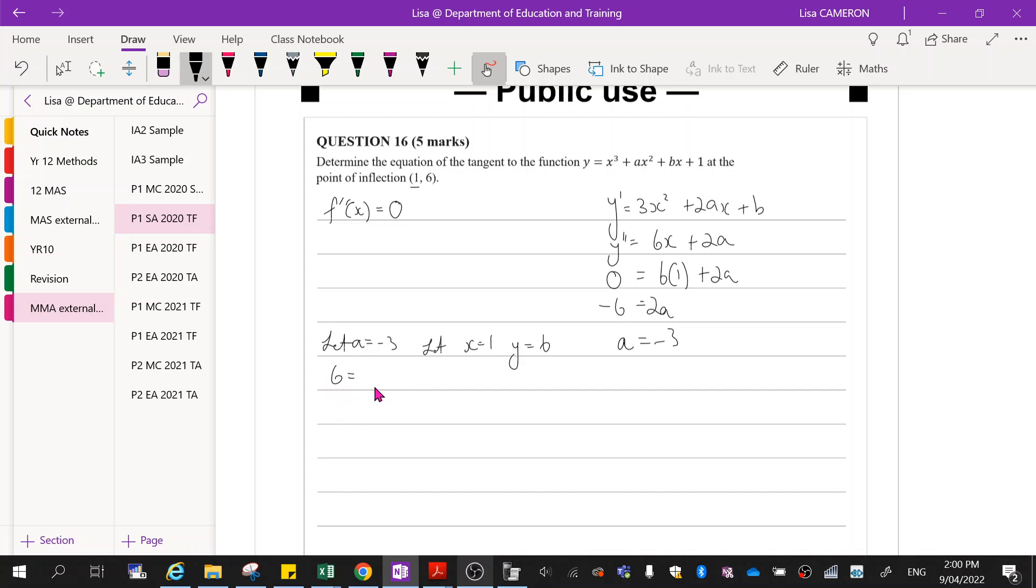So 6 equals 1 cubed is 1 plus negative 3 times 1 squared plus b times 1 plus 1. Now I can group up my like terms on this side. So negative 1 plus b. Take this over that side, so then b equals 7.